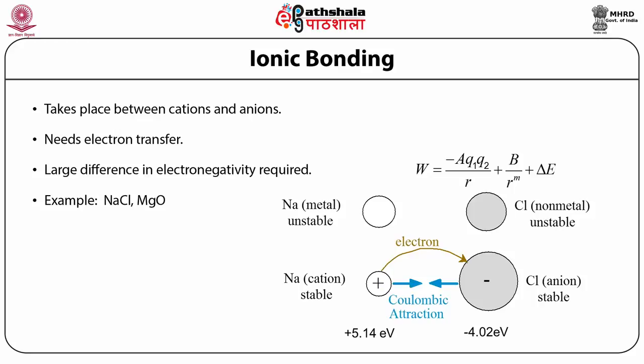The bond energy is determined by taking the first derivative and equating to zero, from which we find W0 at an equilibrium distance R0. This type of bonding typically leads to high bond energies. As a consequence, ionically bonded materials typically exhibit high bond strength, high melting point, high elastic modulus, brittle nature, and low thermal and electrical conductivities.